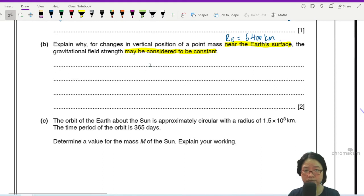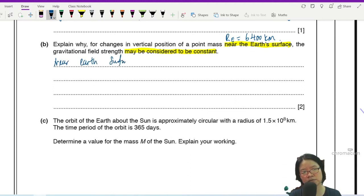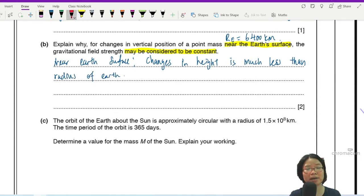So when it comes to gravitational field, there are two ways to do this. You can either use your words or you can use equation. So the first thing I will say is that near the Earth's surface, the changes in height are, you throw a ball up for 3 meter, 2 meter, it's nothing. Changes in height is much less than the radius of Earth. You must mention much less. If you want to hammer it in, you can also just put very much lesser than the radius of the Earth.